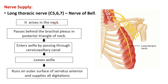The serratus anterior muscle is supplied by the long thoracic nerve, which is long and runs on the thorax — that is why it is named the long thoracic nerve. The root value is C5, C6, and C7. It takes origin from the roots of the brachial plexus directly and is also known as the nerve of Bell.